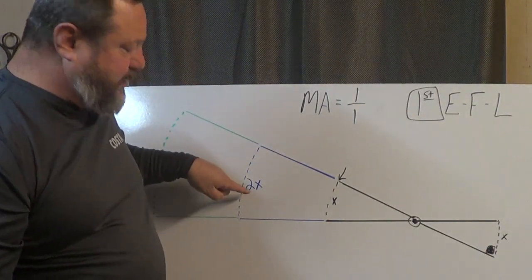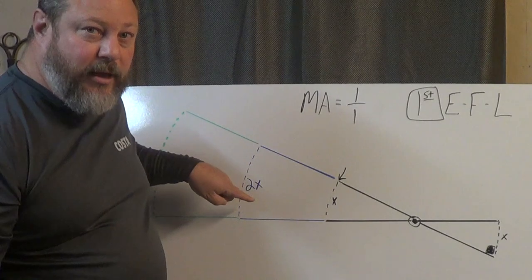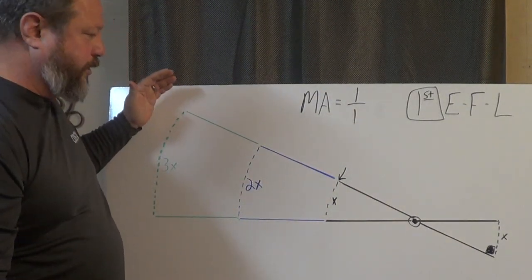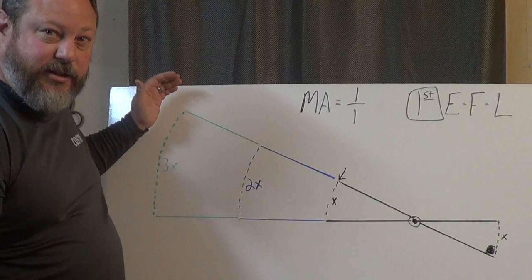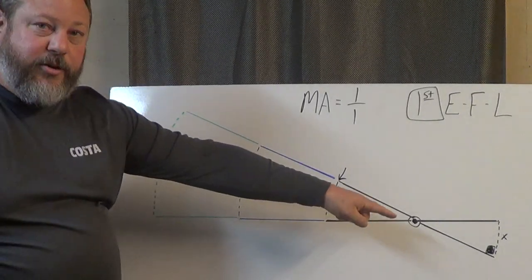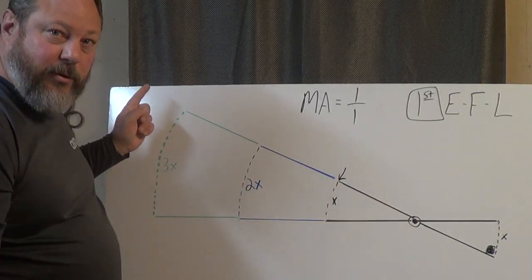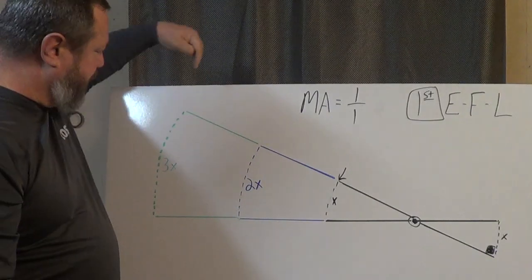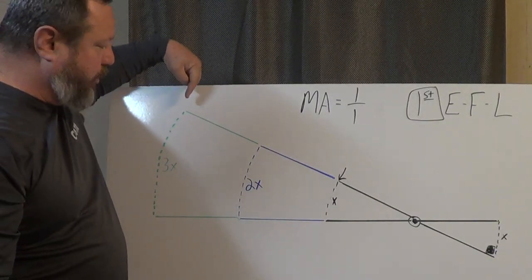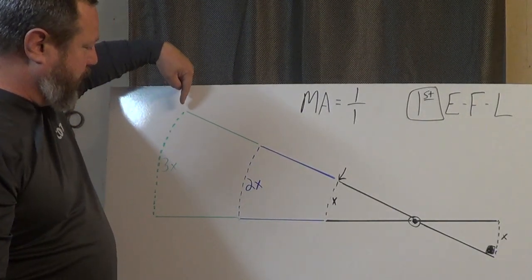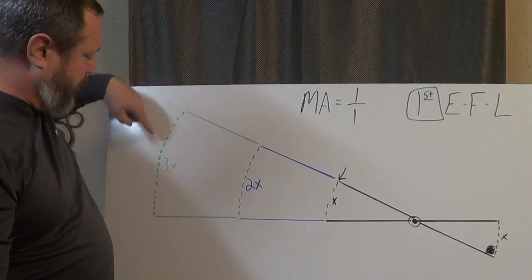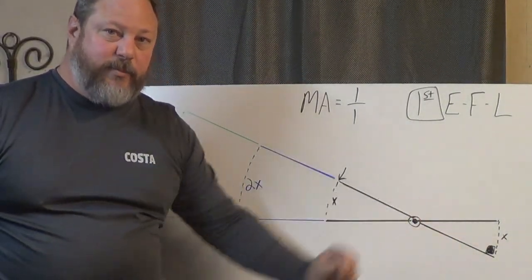So if that was distance x, the amount I have to rotate is now 2x. If I go out even farther and I give myself a three to one mechanical advantage, now to lift the 100 pound weight I only need 33 and a third pounds of force down on my lever, but my lever, my effort arm, is going to travel three times the distance as my load.